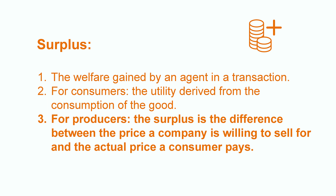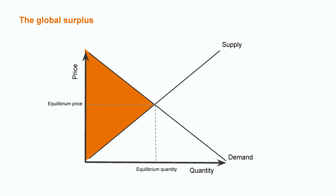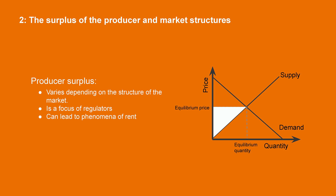This is the standard supply and demand model. The global surplus is modeled as the orange area. The surplus of the consumer is the upper part of the triangle. The surplus of the producer is the lower part of the triangle.